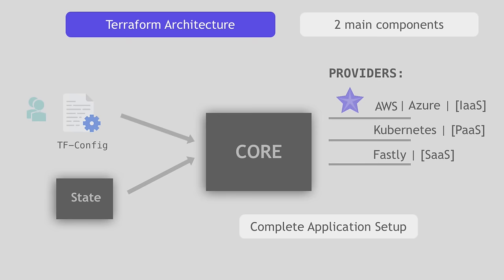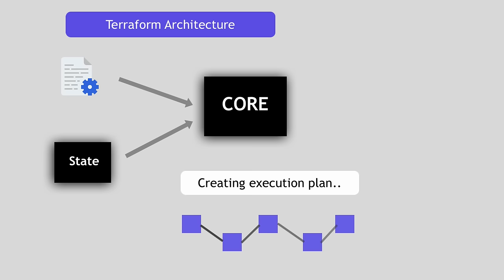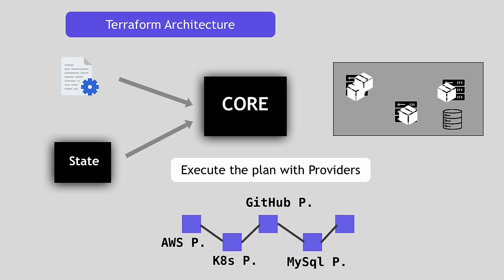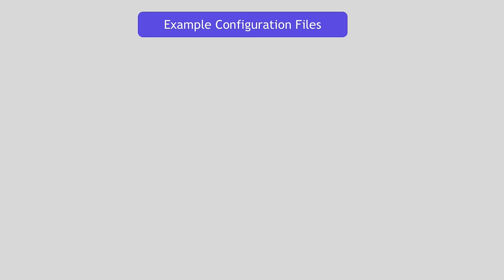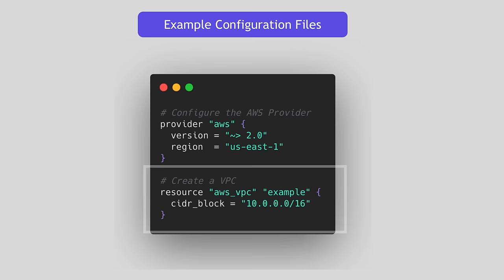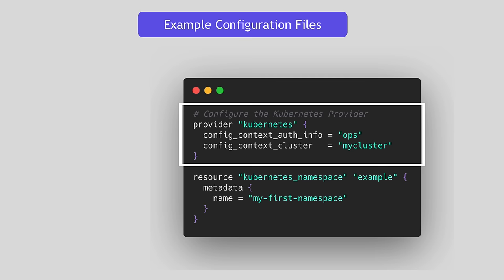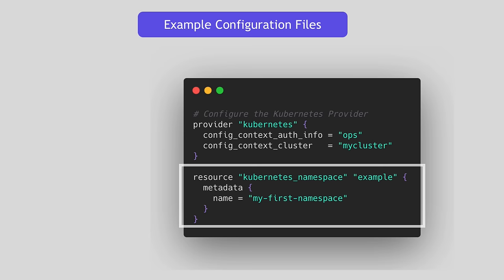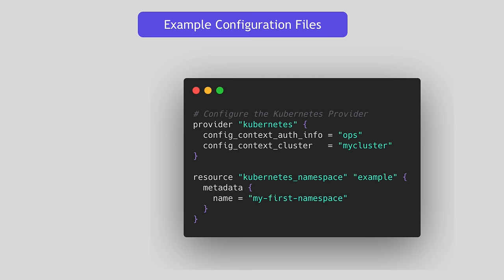Once the core creates an execution plan based on the config file and state, it uses providers to execute the plan and connect to those platforms. Here's an example of how a Terraform configuration file looks. You can see an AWS provider is configured, and through that provider you have access to AWS resources like VPC which you can create with some attributes. Similarly, a Kubernetes provider is configured, and through it you can create a Kubernetes namespace resource with its attributes. The syntax is very intuitive — you define what resource you want created, and then define its attributes.